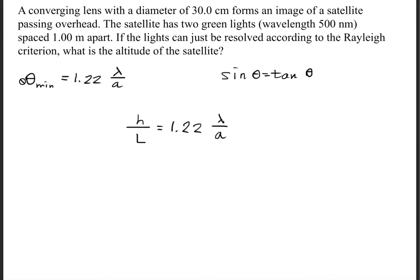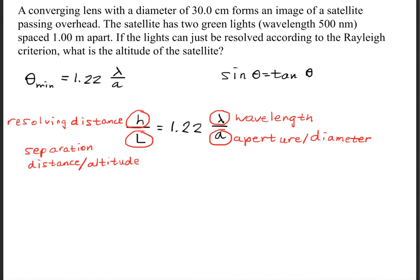This allows us to rewrite the Rayleigh criterion into this form right here, which is h over L is equal to 1.22 times lambda divided by a. So here's what these variables mean. Let's start off with the more obvious one. Lambda is simply the wavelength. A is the aperture or the diameter. It's simply the opening for the lens.